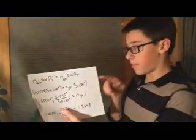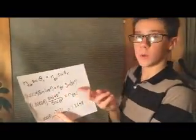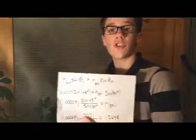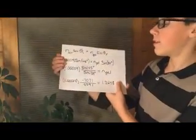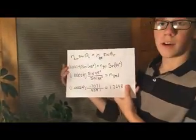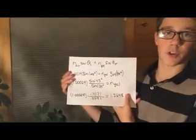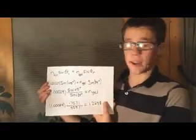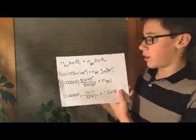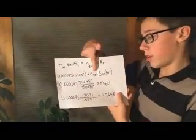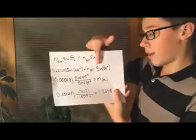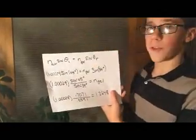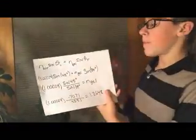Then we filled in our new equation. The refraction index of air times sine of 35 degrees — our incident angle — equals the refraction index of gelatin, which is what we want to find out, times sine of 34 degrees.